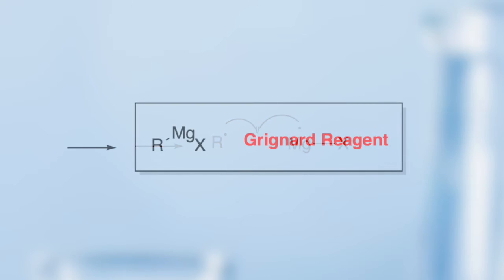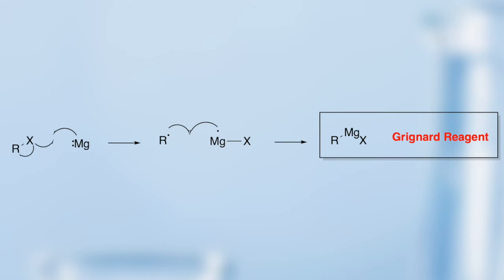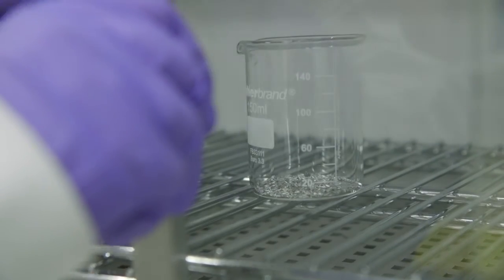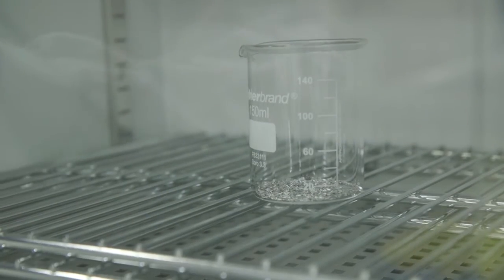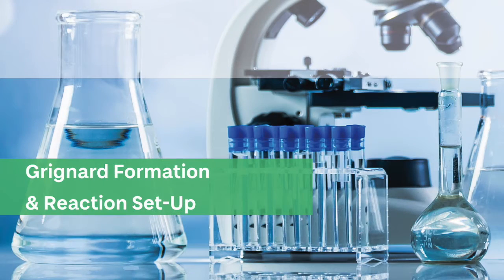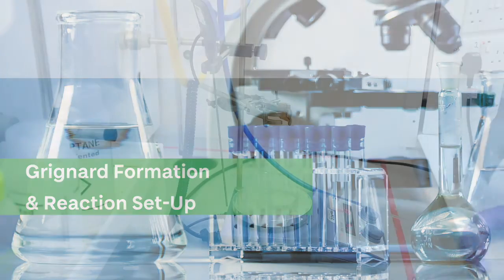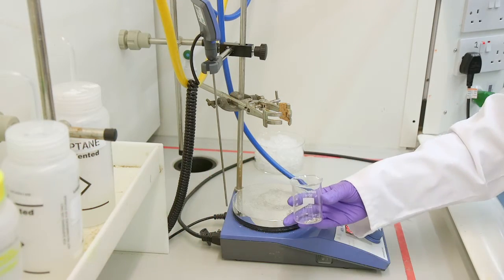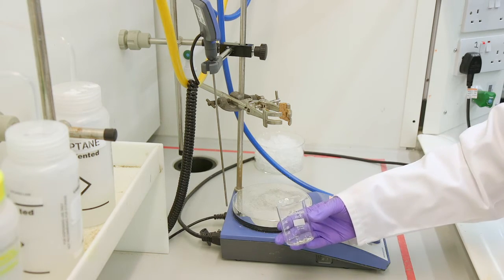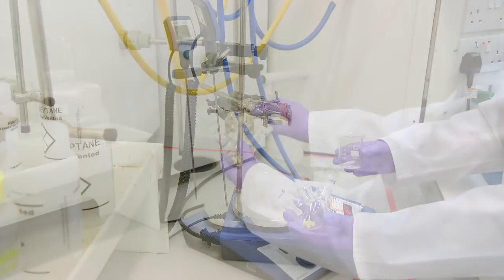In an ideal scenario you want your magnesium to be as activated as possible so that it will insert into that carbon halide bond to make your Grignard. If possible you should put the turnings that you want to use in an oven overnight beforehand and then take them out. So here are my magnesium turnings from the oven. We will add the pre-weighed amount to our multi-neck round bottom flask containing a stir bar.